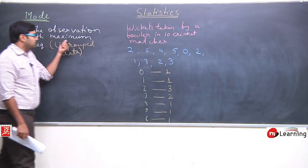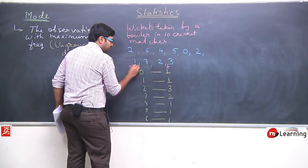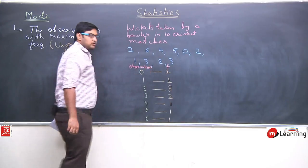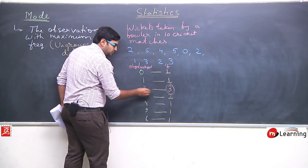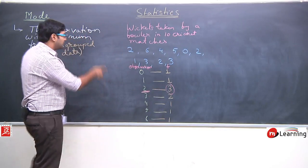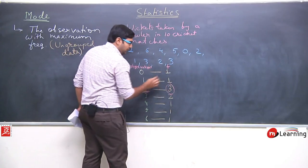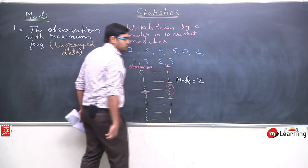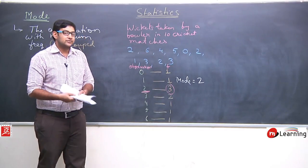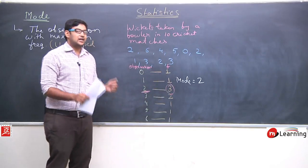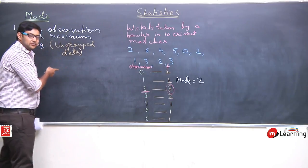I defined mode as the observation with maximum frequency. Looking at the frequency column, the maximum frequency is 3, and this corresponds to the observation 2. So the mode of this ungrouped data is 2, because the frequency of taking 2 wickets is 3. This is an ungrouped data and this is how we find mode for ungrouped data.